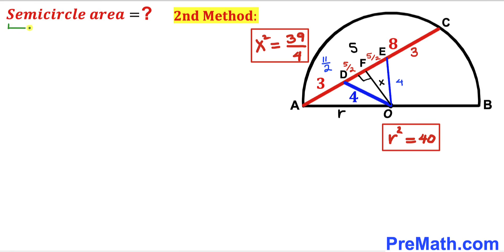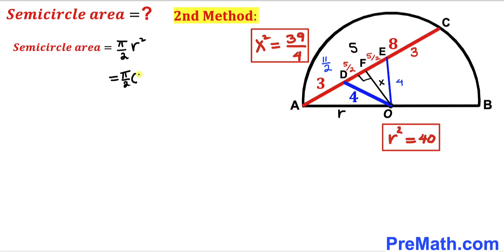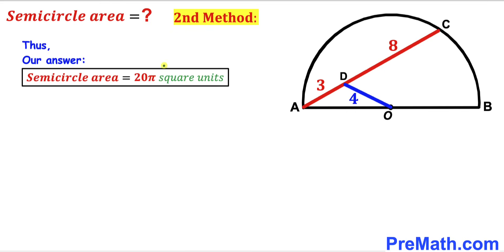For the final step, we calculate the area of this semicircle. The semicircle area equals pi divided by 2 times r squared. With r squared equals 40, we get pi over 2 times 40, which gives us 20 pi square units — the area of this semicircle by the second method as well. Thanks for watching, and please don't forget to subscribe to my channel for more exciting videos.